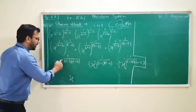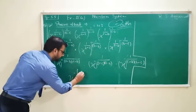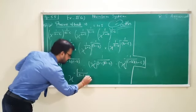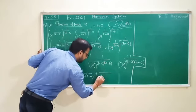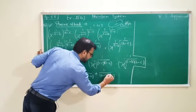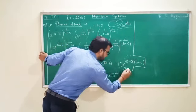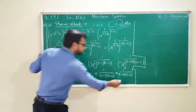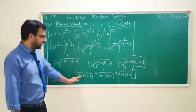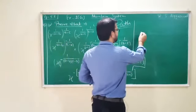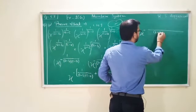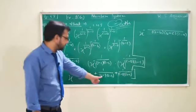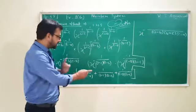Now हम इन सबका LCM लेंगे. इसी ने sequence सिखाया था! So LCM — बहुत easy LCM आएगा. Sequence: A, then A minus B; B, then B minus C; C, then C minus A. So LCM is (A minus B)(B minus C)(C minus A). यह benefit हुआ minus common करने से — नहीं तो LCM में बहुत tough हो जाता.